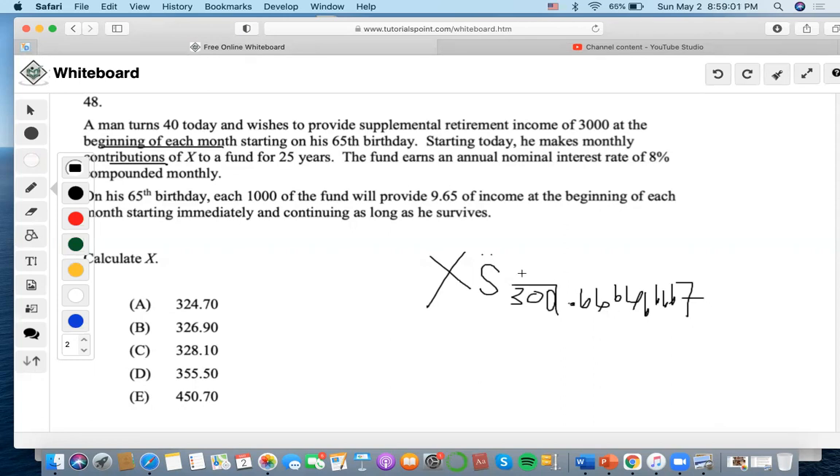Now it says that on his 65th birthday each $1,000 of the fund will provide $9.65 income at the beginning of each month and continue as long as he survives. So the man turns 40 today, wishes to provide supplemental retirement income of $3,000, and each $1,000 of the fund will provide $9.65 of income at the beginning of each month. So that means that the income they're talking about is the retirement income.